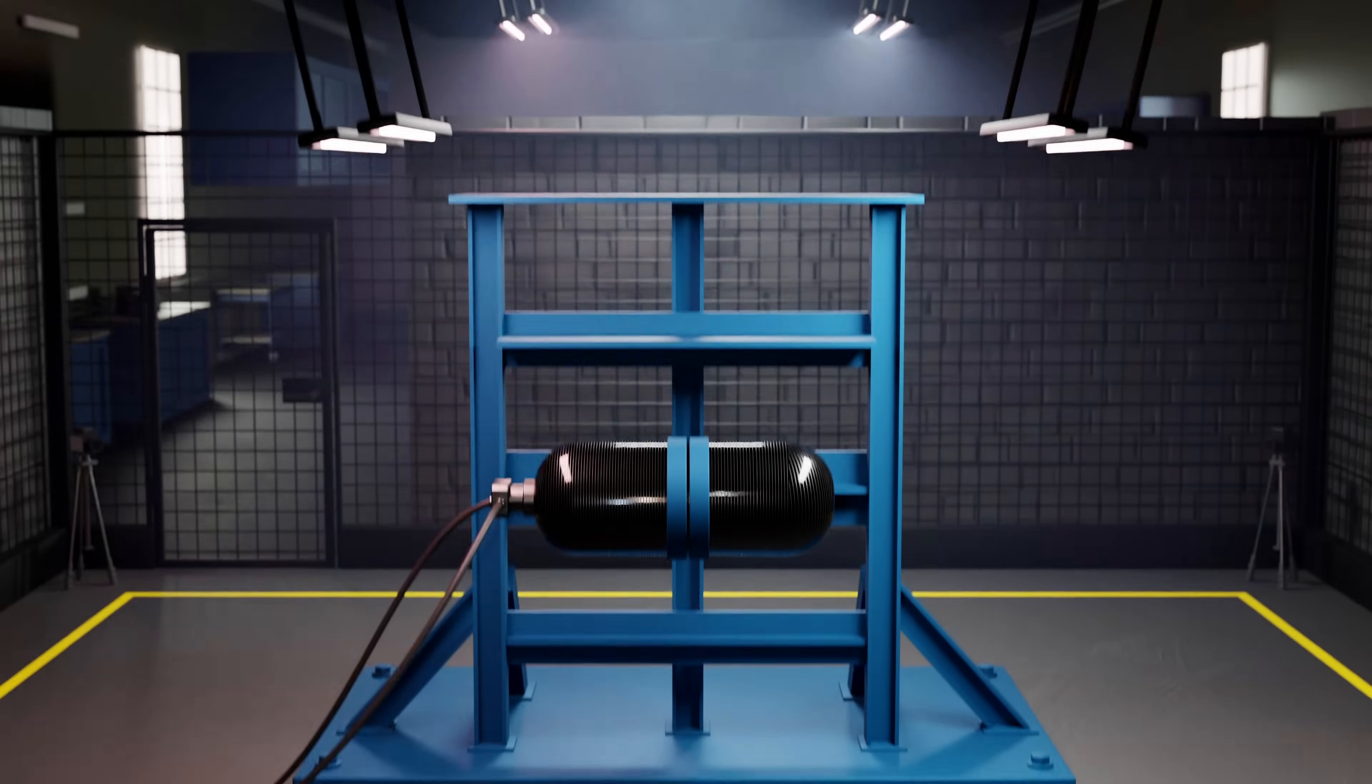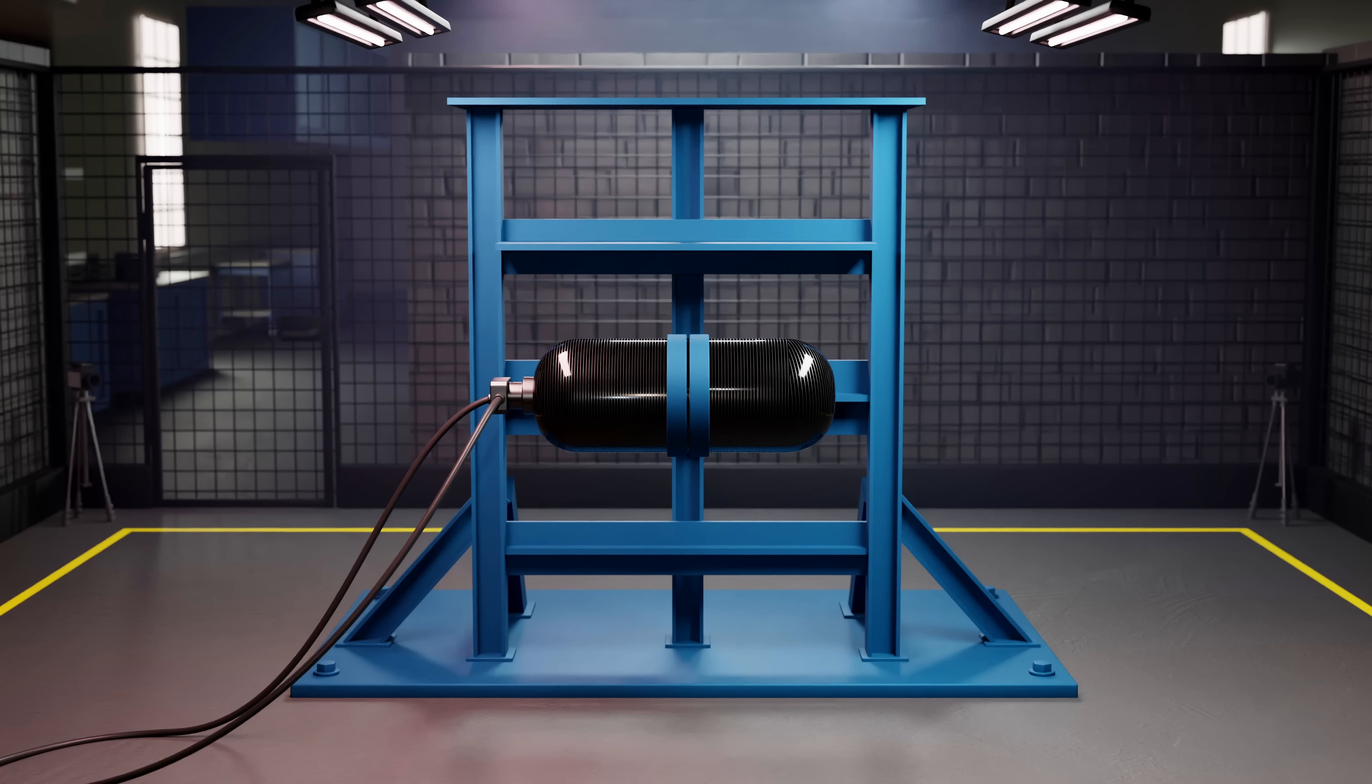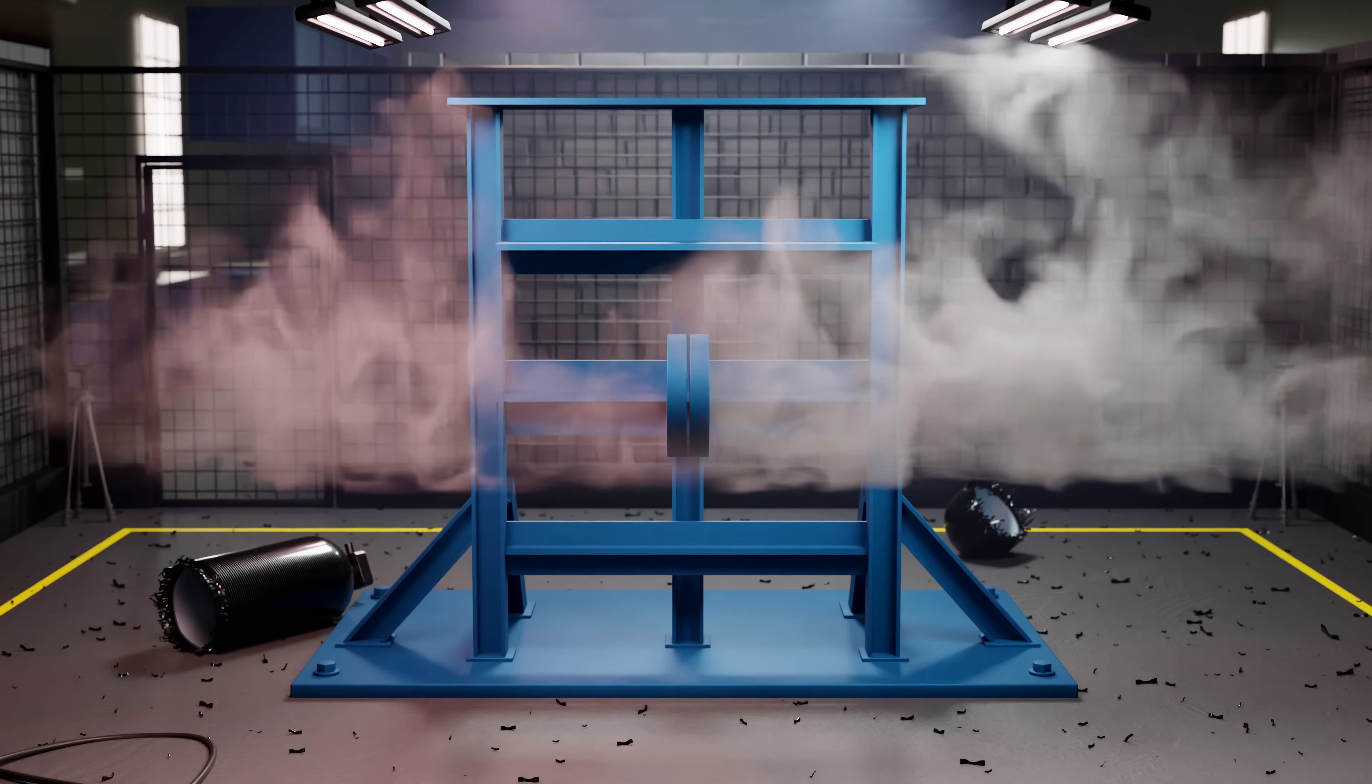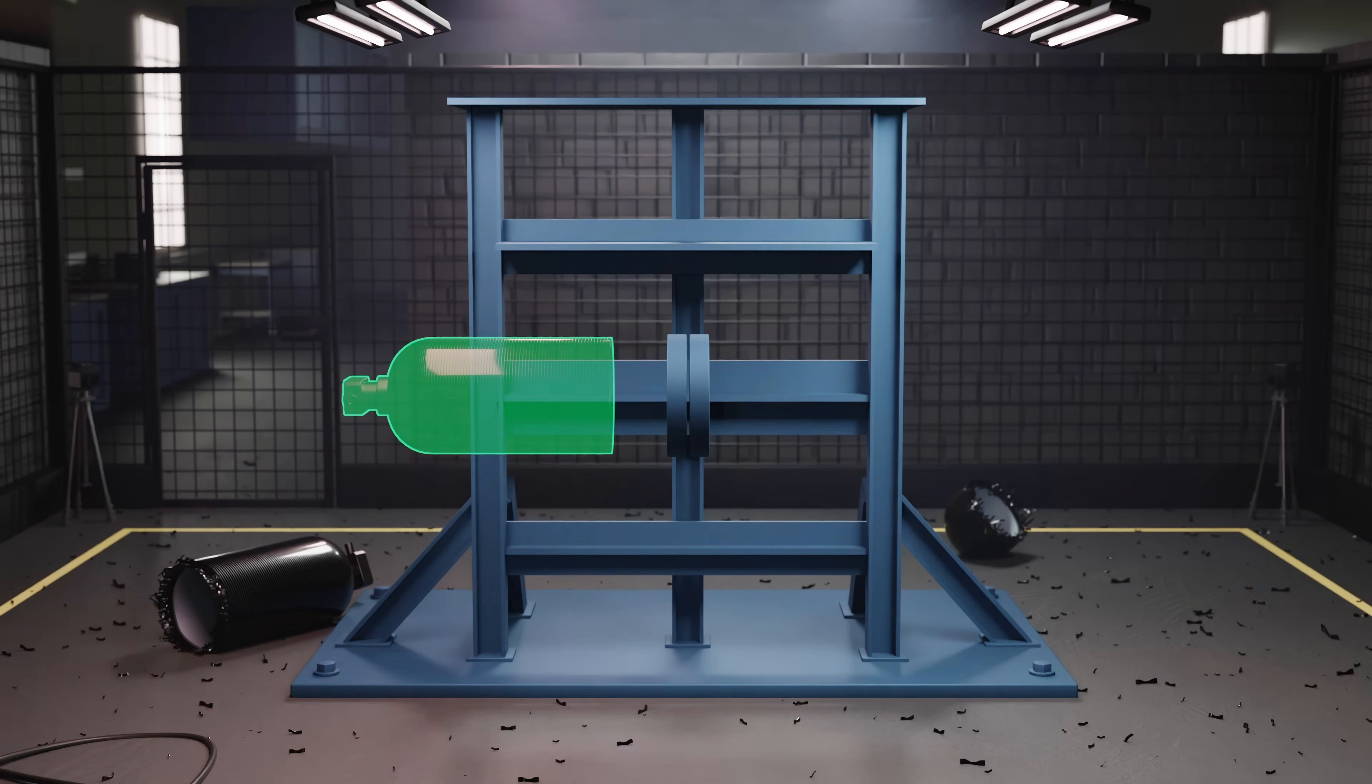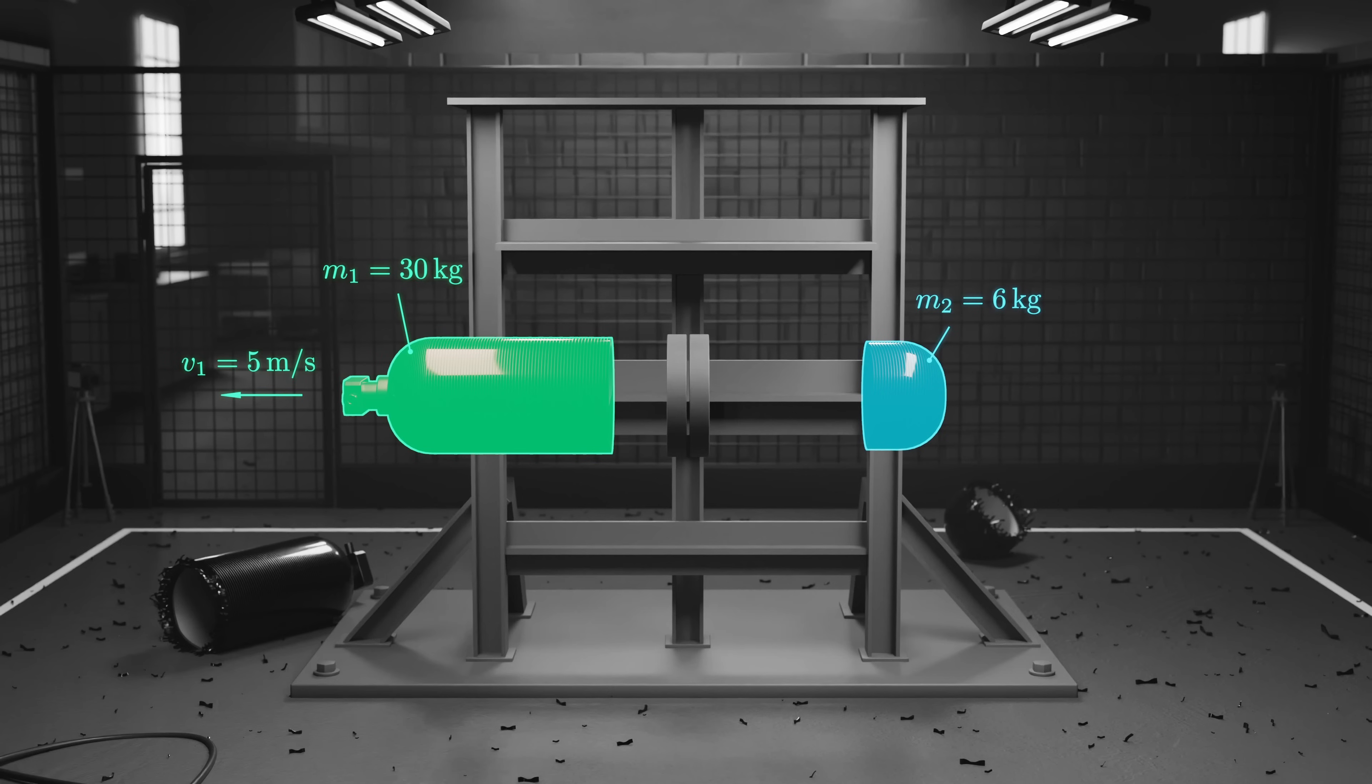Imagine this, a composite pressure vessel is being pressure tested, and during the test, it fails and fractures into two pieces. High speed cameras record the action. The heavier fragment, weighing 30 kilograms, is captured moving to the left at a speed of 5 meters per second. But the lighter 6 kilogram fragment moves so fast it's just a blur on the footage. Let's use what we know about momentum to figure out the velocity of the second fragment.